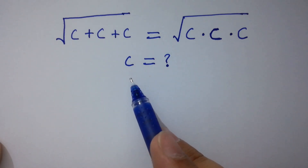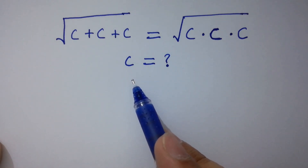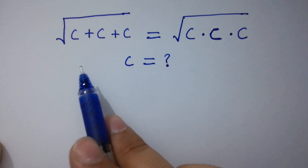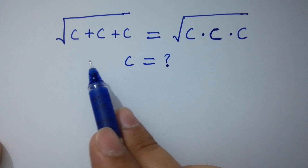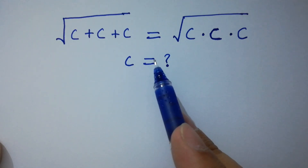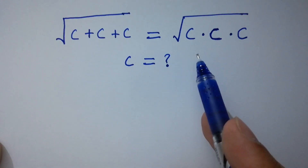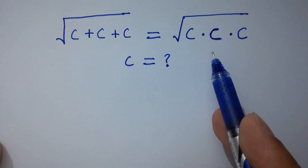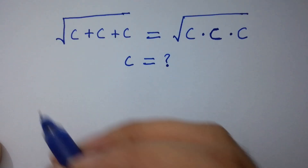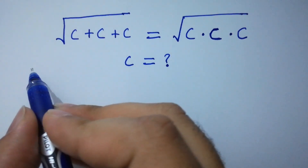Hello friends. Find the value of c if square root of c plus c plus c equals square root of c times c times c. Let's have a solution.